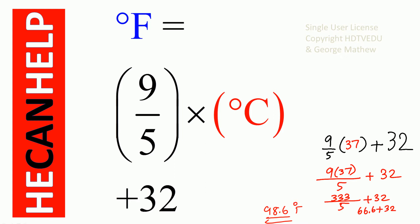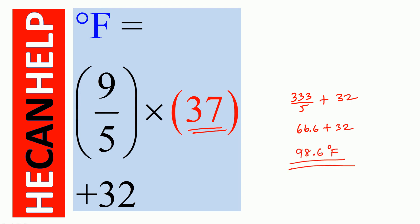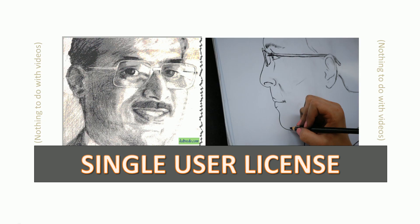So 98.6 degrees Fahrenheit is equal to 37 degrees Celsius. Again, 9 over 5 times the temperature in degrees Celsius plus 32. With 37 degrees Celsius: 9 times 37 divided by 5 is 333 divided by 5, plus 32, which is 66.6 plus 32, equals 98.6 degrees Fahrenheit. This is George Matthew signing off — good luck.